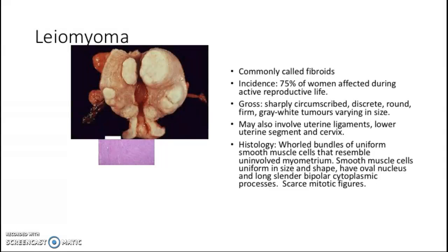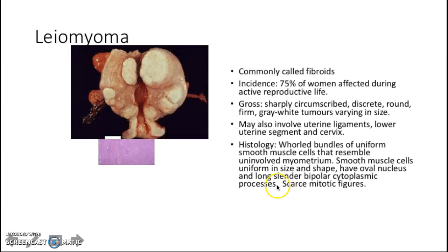Leiomyoma, commonly called fibroids, is very common — 75% of women will be affected in their active reproductive life. Grossly, it presents as a sharply circumscribed, discrete, round, firm, gray-white tumor varying in size, and may also involve the uterine ligaments, lower uterine segment, and cervix. Histologically, it is composed of uniform smooth muscle cells that resemble uninvolved myometrium, uniform in size and shape with oval nuclei and long slender bipolar cytoplasmic processes, with scarce mitotic figures.